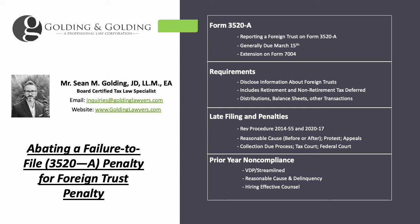Unfortunately, not all penalties from 3520-A can be abated using this revenue procedure — it just may not be that type of trust. Generally, these are assessable penalties unless brought up during an audit. You generally don't get any notice beforehand; you get a CP15 notice basically telling you you've been penalized under code section 6677. Then you get 30 days to protest. You can show reasonable cause and not willful neglect, and you may be able to get that penalty resolved. If not, sometimes you'll get a request to supplement or an opportunity to go to appeals.